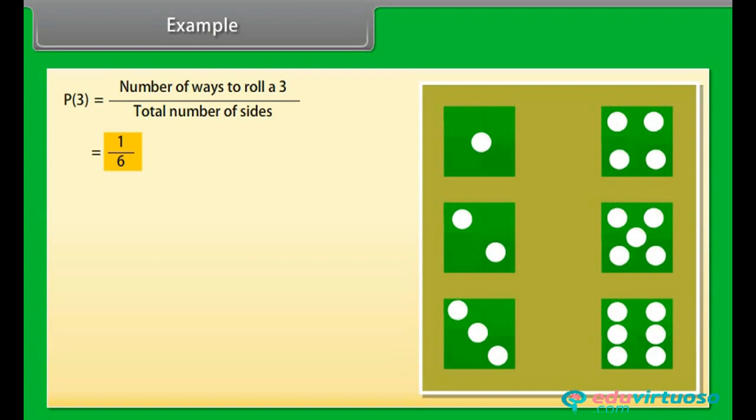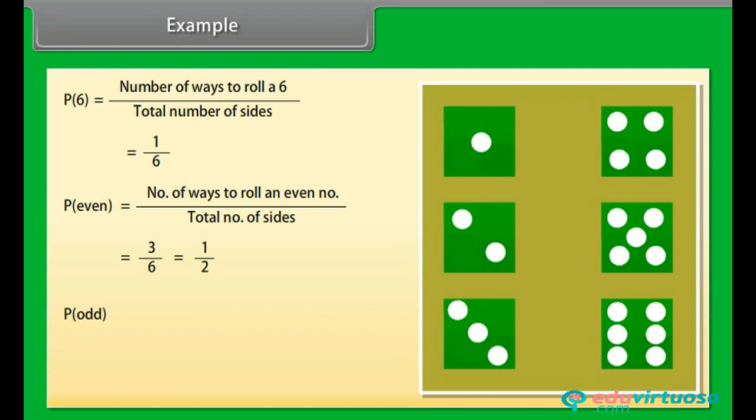In the same way, we will find the probabilities of 4, 5, and 6. Now we can see that the way to roll even numbers is 3. We can find the probability as P(even) equals number of ways to roll an even number upon total number of sides, which is equal to 3 upon 6, which is 1 upon 2. And way to roll odd number is 3. So the probability is P(odd) equals number of ways to roll an odd number upon total number of sides, which is equal to 3 upon 6, which is 1 upon 2.